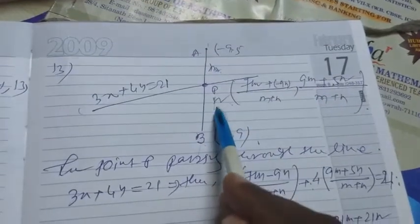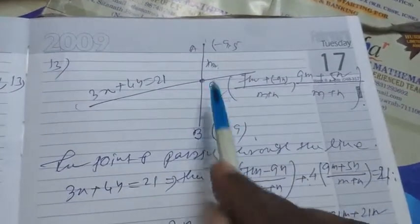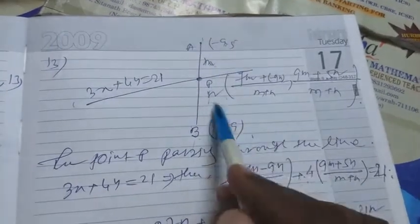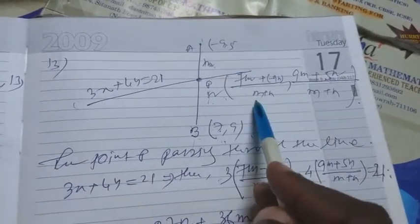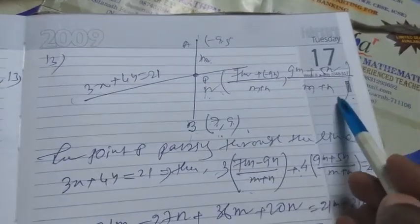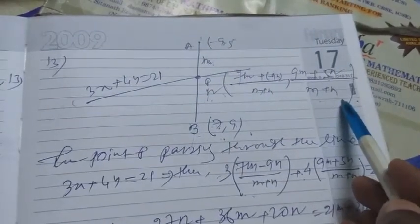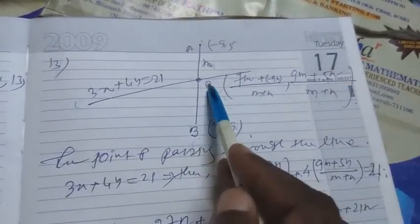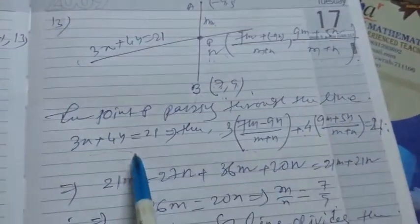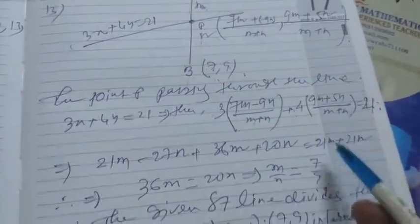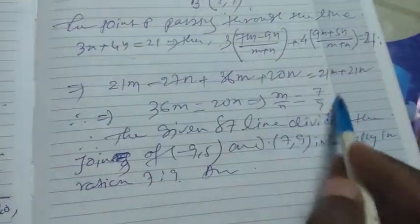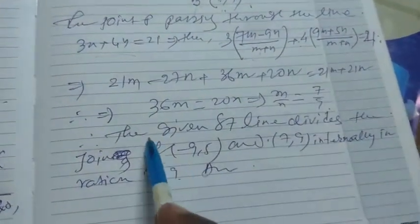To summarize: the coordinate of P is (7m - 9n)/(m+n) and (9m + 5n)/(m+n). Since P lies on the line, we substitute into the equation and get m:n = 7:9, a positive value, so the straight line divides the joining of points (-9,5) and (7,9) internally in the ratio 7:9.